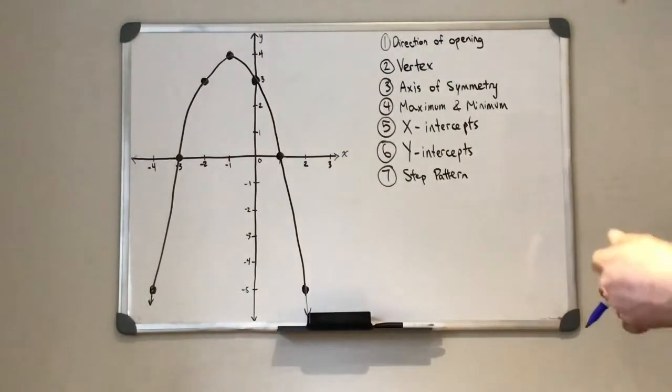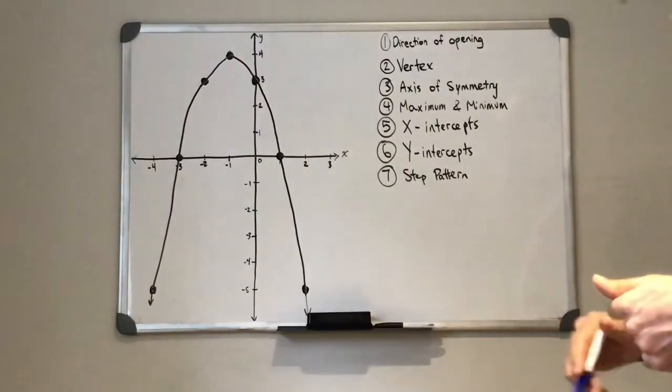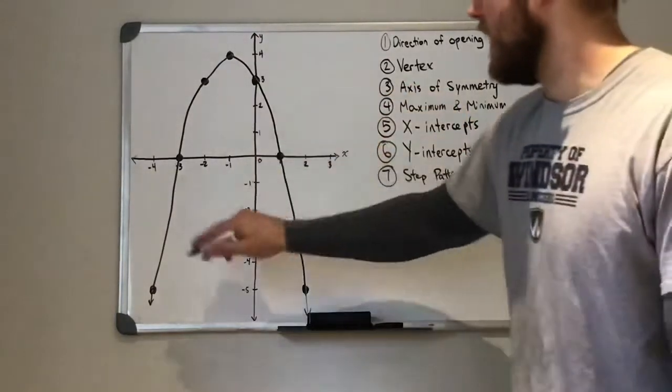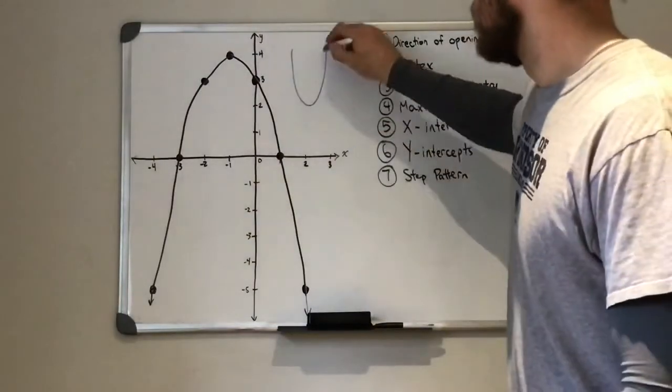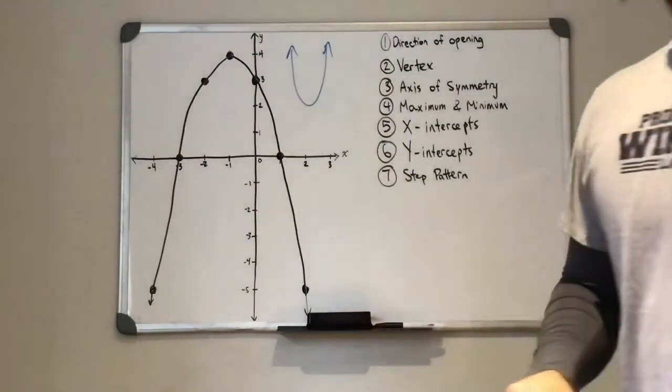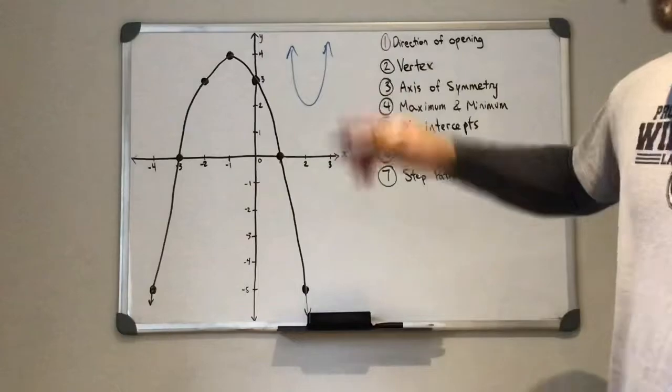We're going to be dealing with a few fancy words this chapter like parabola. Parabola is the name of this curve here. It can look like this or it can go the opposite way. Okay, so those are our two parabolas.